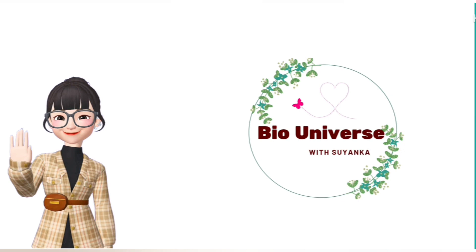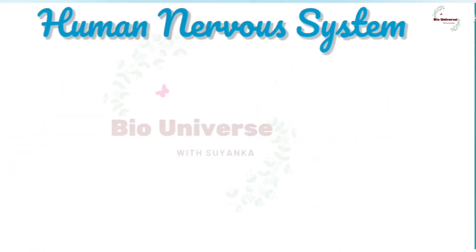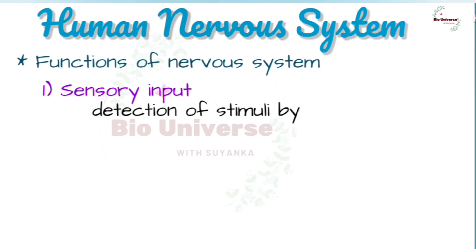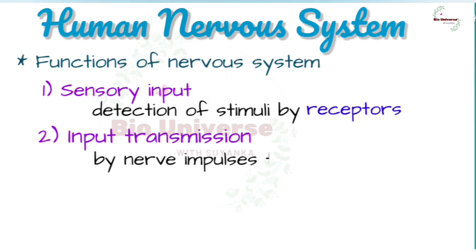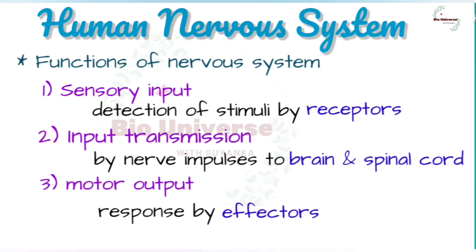Welcome to Bio Universe. Today we will learn about the human nervous system. The nervous system performs mainly three functions: sensory input, which is the detection of stimuli by the receptors or sense organs; transmission of this input by nerve impulses to the brain and spinal cord; and motor output, which is the carrying out of a response by muscles or glands called effectors.